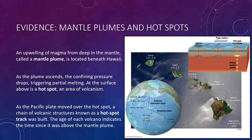One widely accepted hypothesis proposes that a roughly cylindrical upwelling of hot rock originating deep in the mantle — called a mantle plume — is located beneath the island of Hawaii. As the hot rocky plume ascends through the mantle, the confining pressure drops, which triggers partial melting. The surface manifestation of this activity is known as a hotspot: an area of volcanism, high heat flow, and crustal uplifting that is a few hundred kilometers across. As the Pacific Plate moves over the hotspot, which is thought to maintain a relatively fixed position, a chain of volcanic structures known as a hotspot track is built. Of approximately 40 hotspots thought to have formed because of upwelling of hot mantle plumes, most, but not all, have these hotspot tracks.